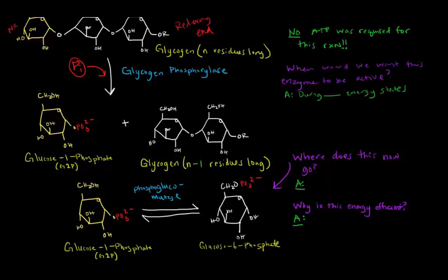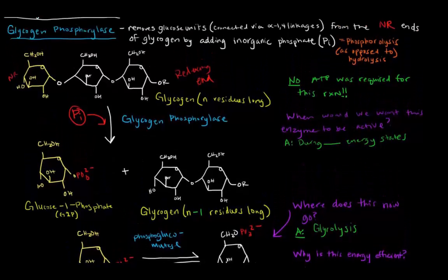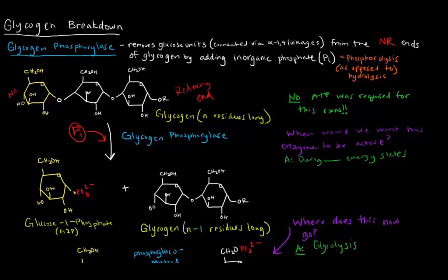So this glucose 6-phosphate will go, where have we seen that? Before we've seen it in glycolysis. So what it will do is it will go to glycolysis and end up going through the entire pathway to make ATP. Now, why do we know that? Why do we know that that would happen?